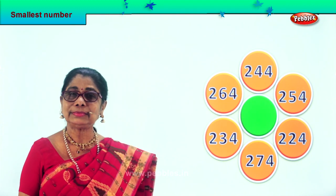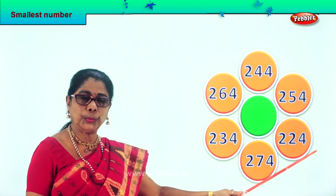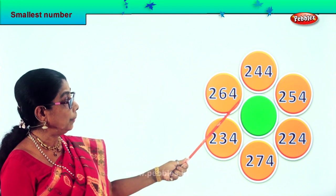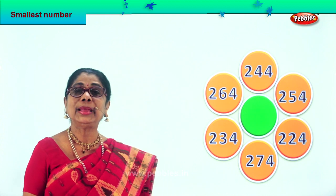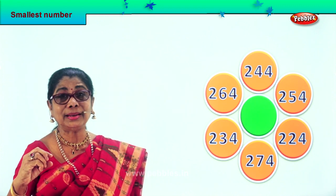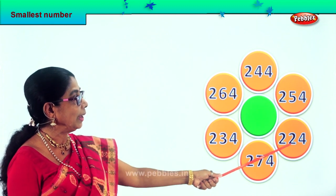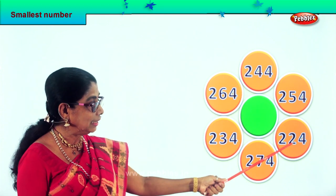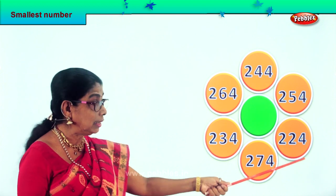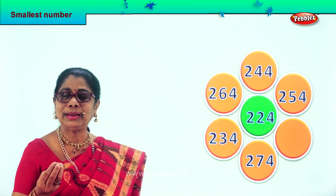Let's look at another sum. Let's read aloud the numbers: two hundred fifty-four, two hundred twenty-four, two hundred seventy-four, two hundred thirty-four, two hundred sixty-four, two hundred forty-four. All numbers come in two hundred. Therefore let's look at the numbers in the tens place — sixty, thirty, seventy, twenty, fifty, forty. Twenty is the smallest, so two hundred twenty-four is the smallest. We take two hundred twenty-four and put it in the middle, because that's the smallest number among the six.